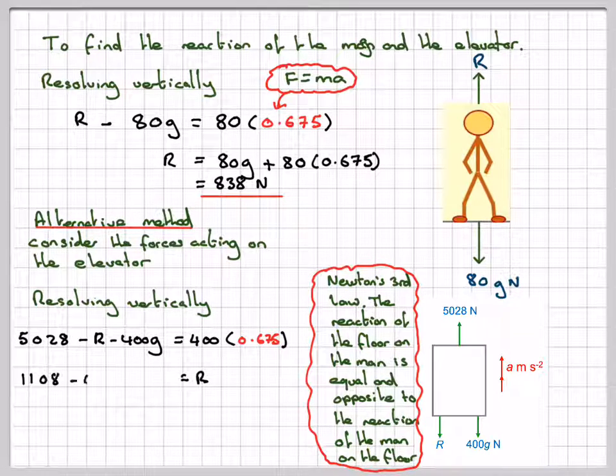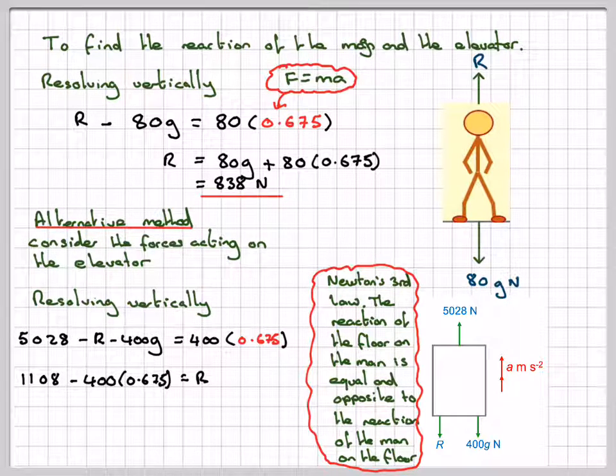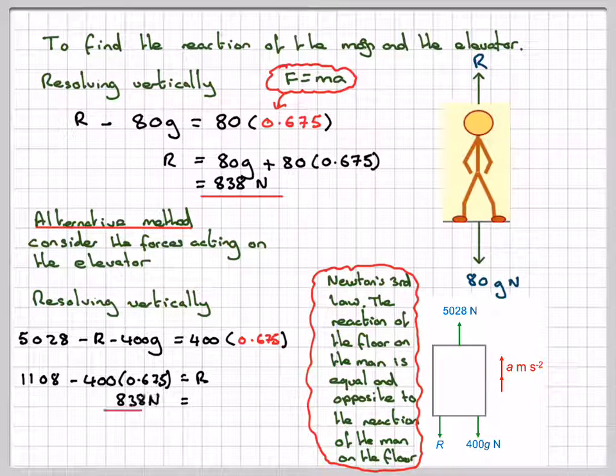Simplifying, we have 1108 minus 400 times 0.675, which gives the same answer as before, 838 newtons. Thank you.